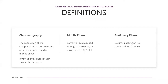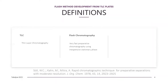The mobile phase causes the compound to move through the column while the stationary phase doesn't move. The idea is to get the compound to stick to the stationary phase for a period of time, and the compounds stay on the stationary phase for different amounts of time, causing a separation.